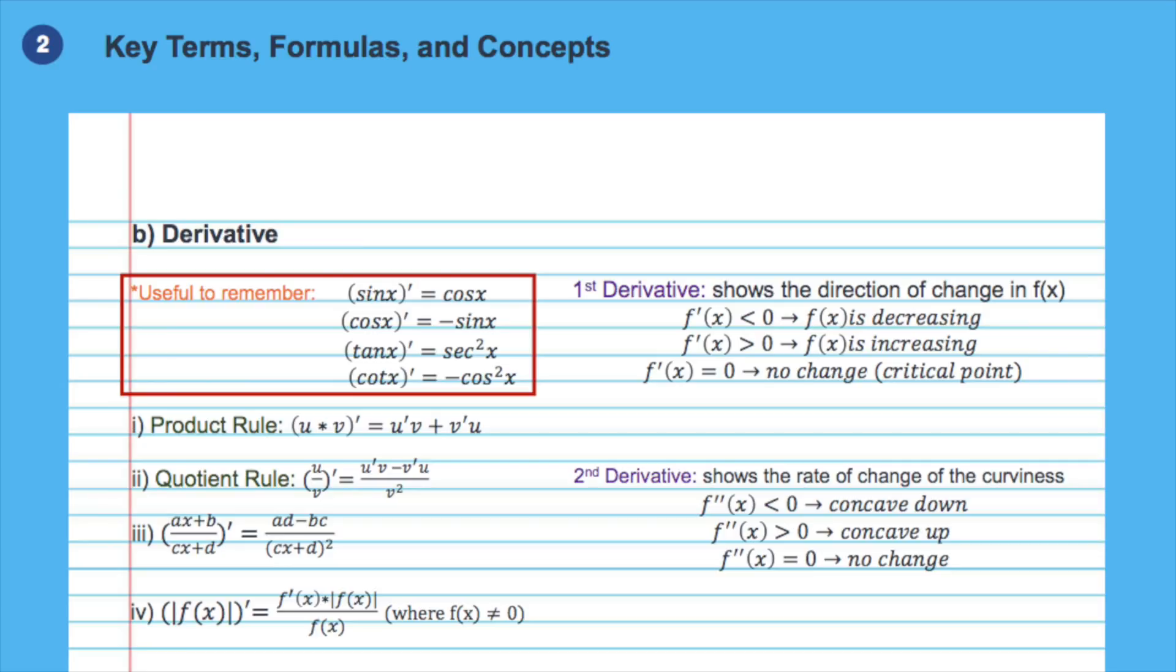The second derivative shows us the rate of change and the curviness of the function. Recall that when you take the second derivative of a line, you will get zero, meaning that the original function does not curve. When the second derivative of f is negative, our function f will be concave down and when it is positive, our function f will be concave up. When the second derivative is equal to zero, we don't have information about the curviness of the function at that given point. Keep in mind that these points are usually what is called inflection points and here we can observe a change in the concavity of the function. Another useful tip to keep in mind is that the second derivative of f acts as the first derivative of f prime, meaning that the sign of the second derivative gives us information about the direction of change of f prime.